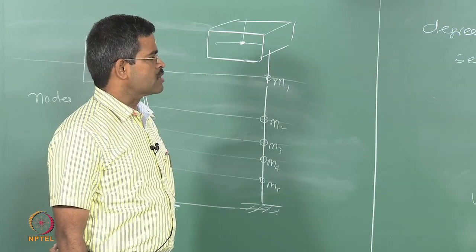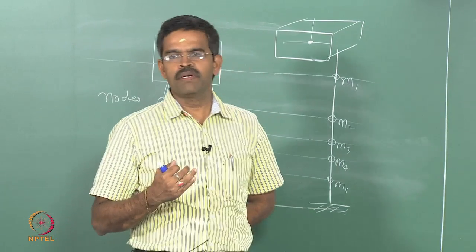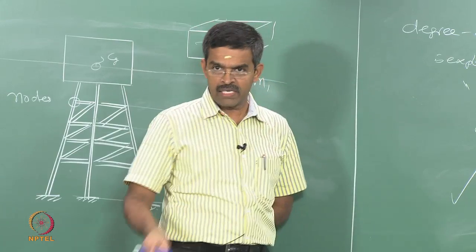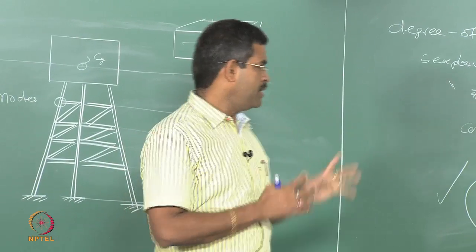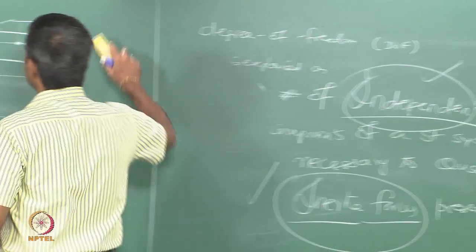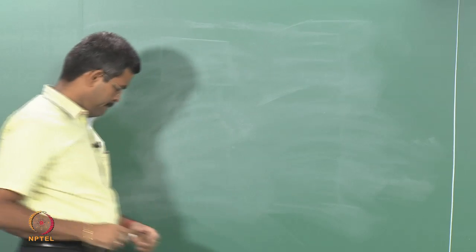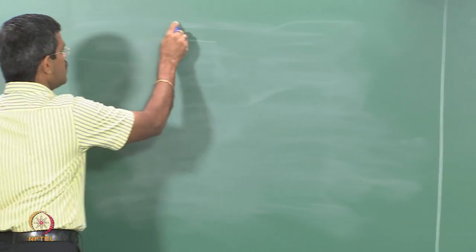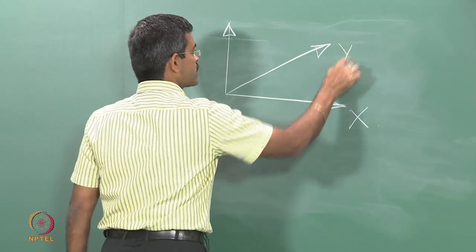How many degrees of freedom does a structural member or system in offshore generally have? For a beam element there can be 4, 6, or 12 degrees of freedom depending on whether you do 2D or 3D analysis, ignore or include axial deformation. In offshore structural systems these are all converged into a single easy definition. Let us see how many degrees of freedom a system can have by considering three axes: x, y, and z.